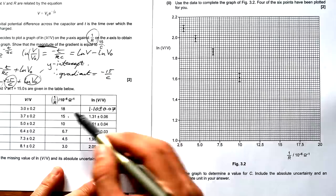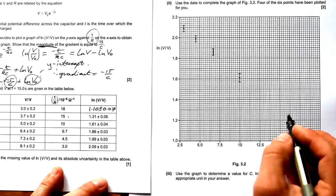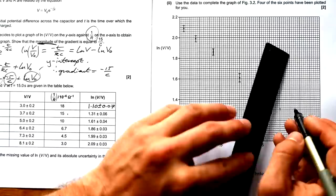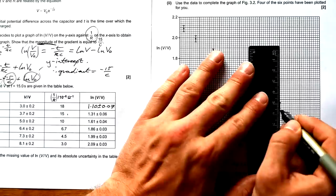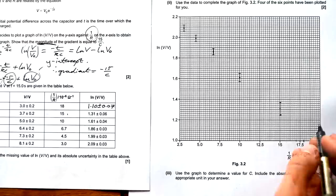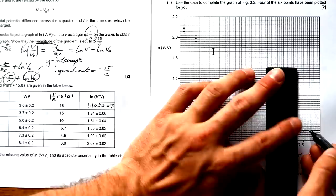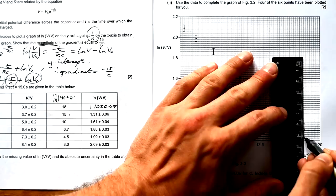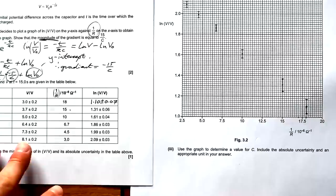Use the data to complete the graph of figure 3.2. Four of the six points have been plotted for you. So the next one we need to do is 15. So that's 15, that's 1 over R. But then log V is 1.31. So 1.3 is there. 1.31 is about there. And our uncertainty is 0.06. So each little square here is 0.02. So we need to go up three little squares: 1, 2, 3. And down three little squares: 1, 2, 3. And then finally 18. And that's 1.1. 18 is there. 1.1 right here. And then we need to go up 0.07. So that's three and a half squares. Down three and a half squares. There you go.